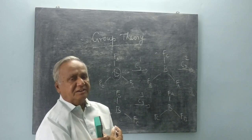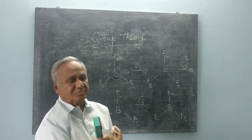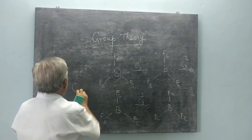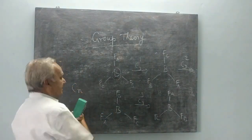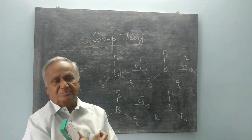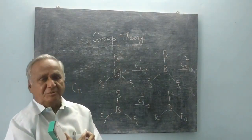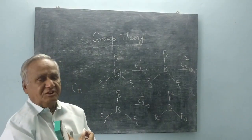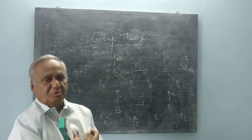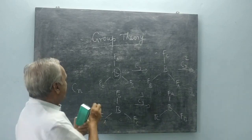I can generalize now: your Cn axis produces n operations — C_n-1, C_n-2, and so on up to C_n-n.